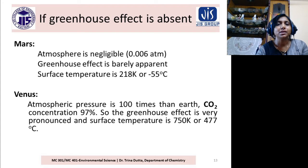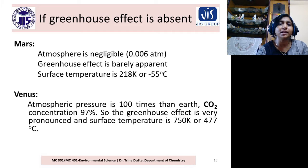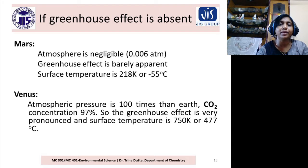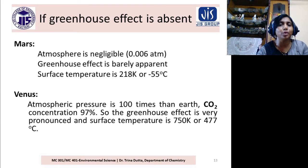On Mars, the atmosphere is negligible, so the greenhouse effect is barely apparent, and the surface temperature is 218 Kelvin — or minus 55 degrees Celsius. You can understand that if the greenhouse effect is absent, life does not exist. That is why on Mars, the temperature is too low and life cannot exist.